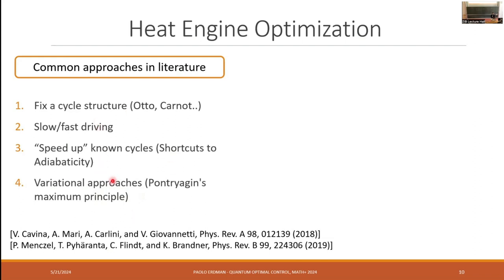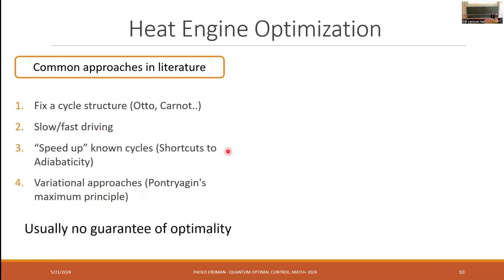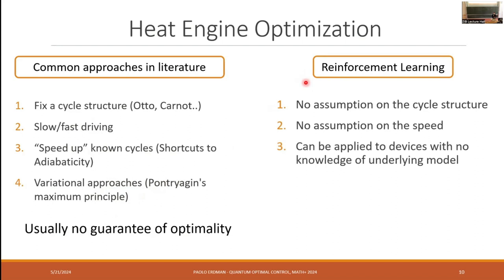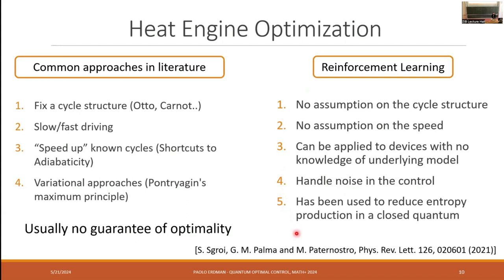However, these three methods, except for variational approaches, were not guaranteed that these will give us the optimal solution in the Pareto-optimal sense. So what we want to do is develop simply a numerical method based on reinforcement learning that doesn't require any assumption on the structure of the cycle, nor on the driving speed. In principle, we could even apply this to experimental devices without a precise knowledge of the model. So we don't need to have a model-based method. We could, in principle, apply it to an experimental device and try to optimize it. It's a framework that allows us to handle noise quite naturally in the control.